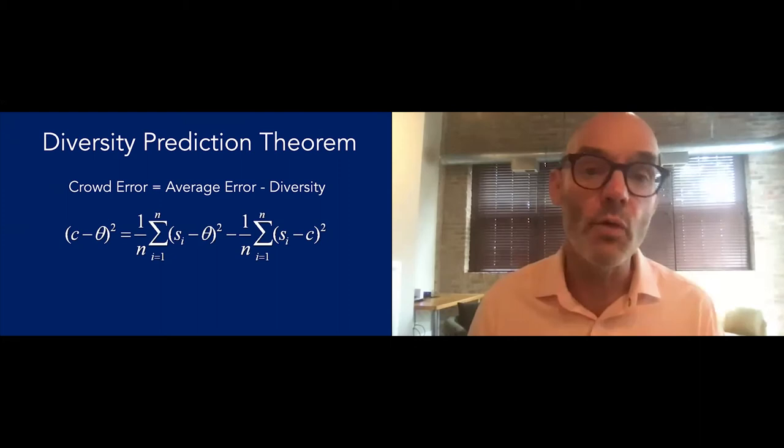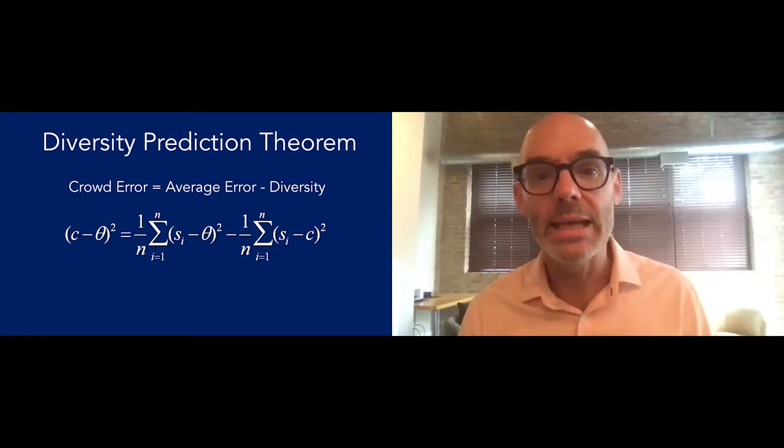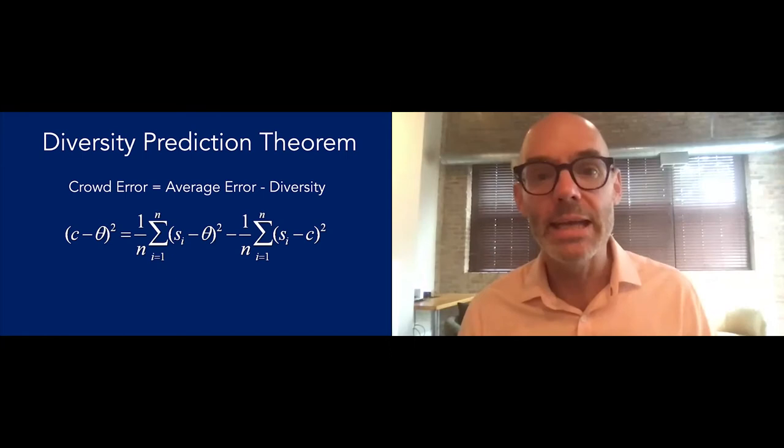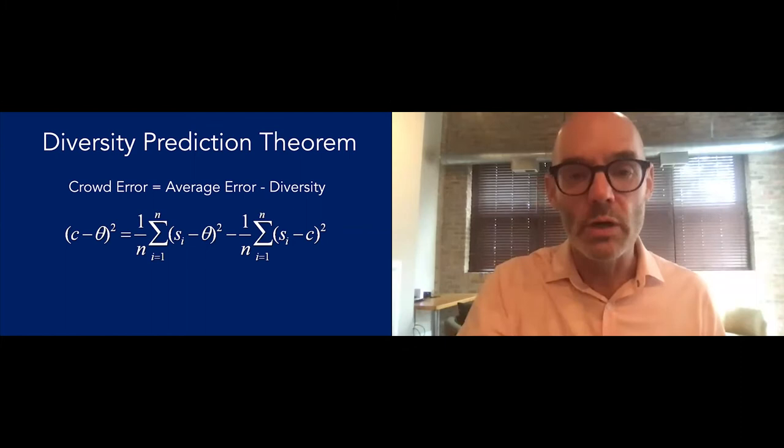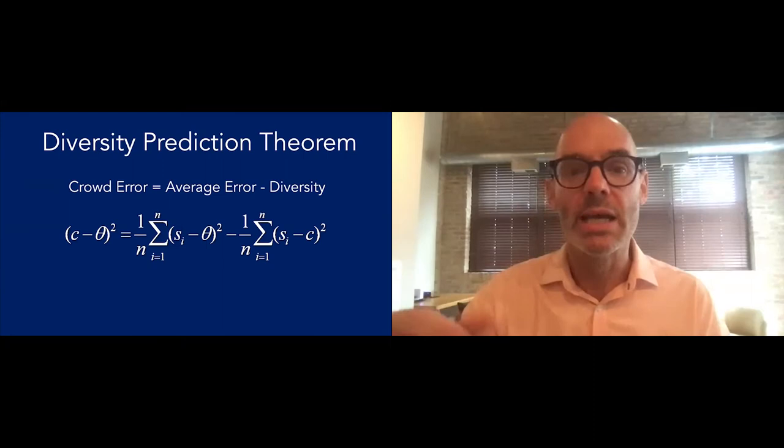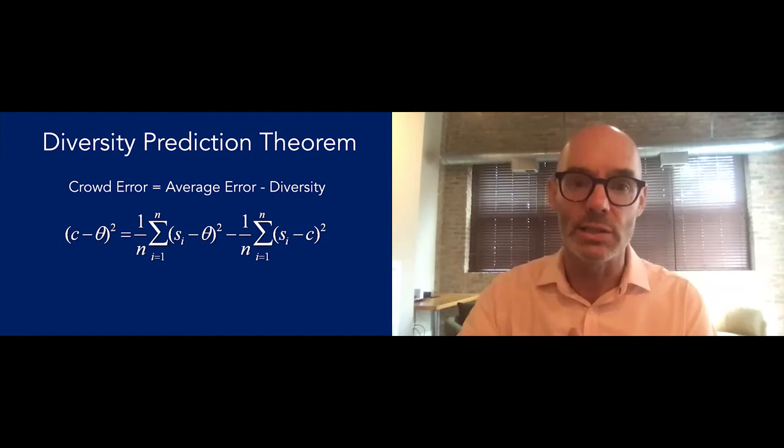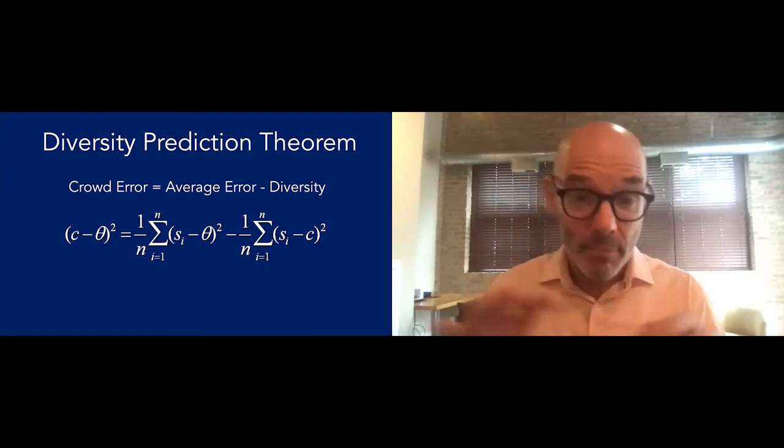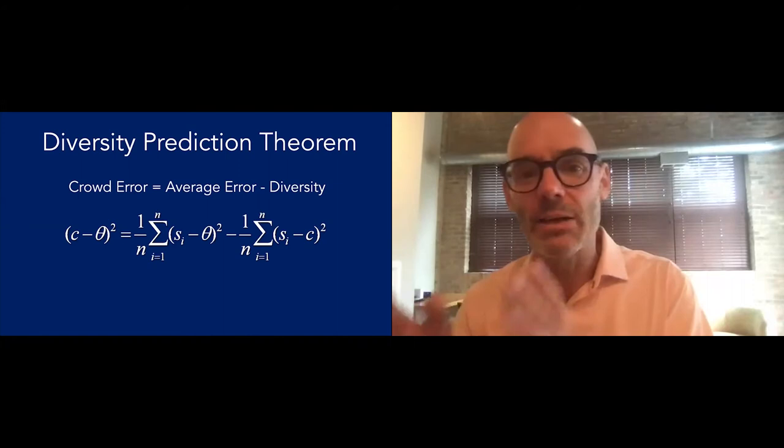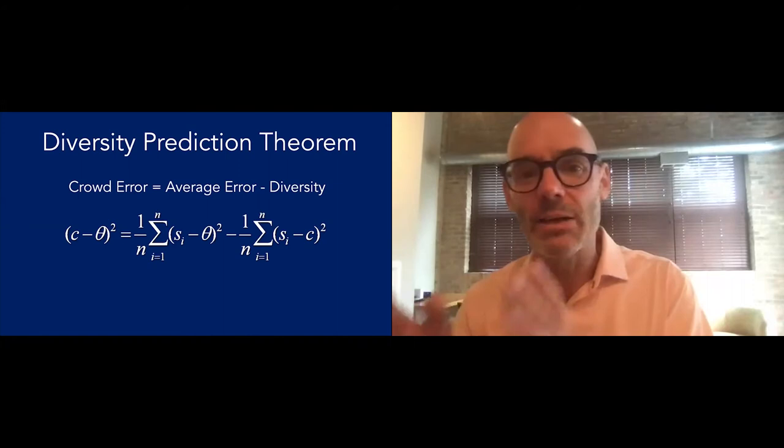You can write something called the diversity prediction theorem that says the following: The crowd's error equals the average error minus the diversity. The crowd is smarter than the average person in it, and the amount by which the crowd is smarter is the diversity. To write it formally: (c - θ)² = 1/n Σ(x_i - θ)² - 1/n Σ(x_i - c)². C is the crowd's prediction, that's the average. Theta is the truth. How far off is the crowd from the truth? That's equal to one over n, the average error of the people in the crowd. However, it's smarter. The amount by which it's smarter is the diversity, which in this case is the variance of the predictions. Why am I calling it diversity? Because these are realizations of different models, different ways of thinking.